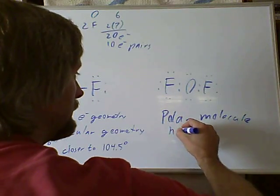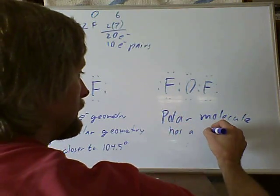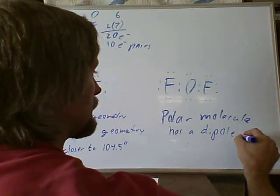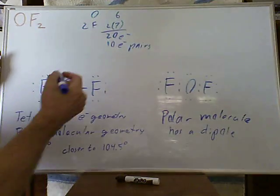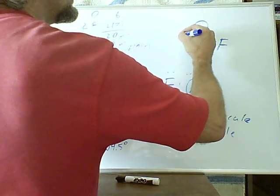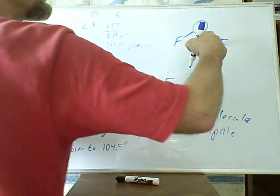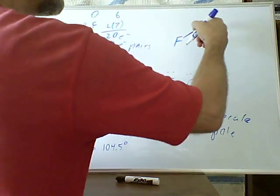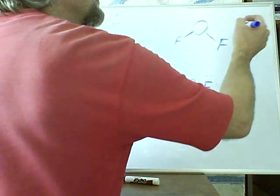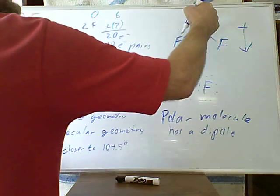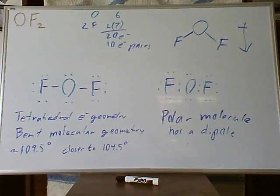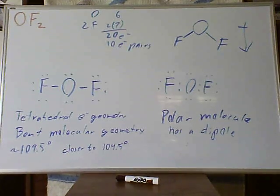Which means it has a dipole. And if you are going to see that visually, you are going to have a bent molecule. The fluorines are more electronegative than the oxygen, so the dipole is going to be negative on the fluorine side and positive on the oxygen side.